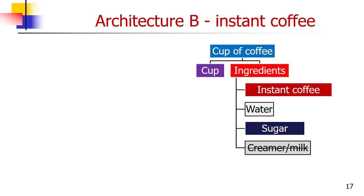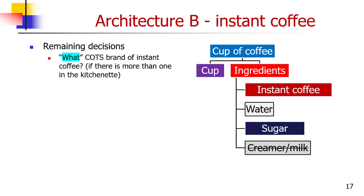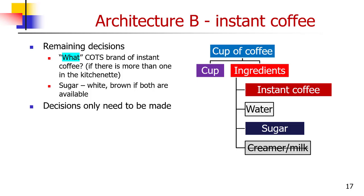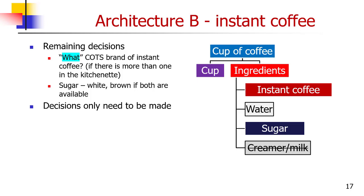Architecture B, the instant coffee, is the generic template except we know the coffee is instant and the sweetener is sugar. Remaining decisions to be made are what COTS brand of instant coffee, if there's more than one in the kitchenette, and whether to use white or brown sugar, or lump versus powdered sugar. We've already decided it's 2 teaspoons, so it's granulated or powdered. These decisions only need to be made if this candidate is selected — they're made in the subsystem construction states — or if the decision will influence the architecture selection process. We might choose a brand of instant coffee that isn't available in the office at this moment; if we have to send out to buy it, it may not be back by 3:30.